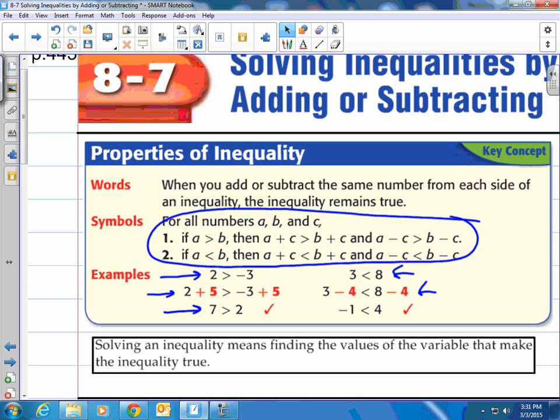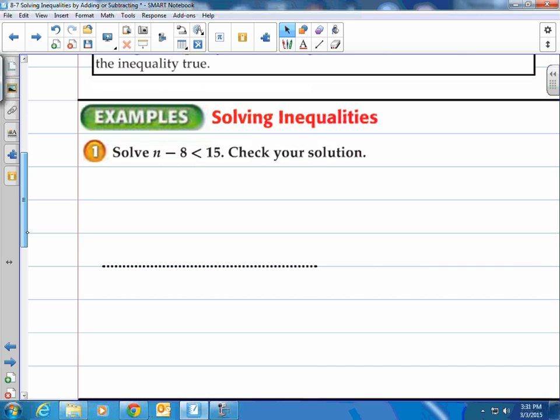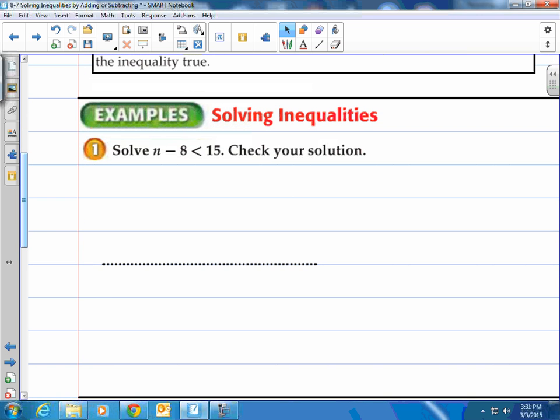It says solving an inequality means finding the values of the variable that make the inequality true. What numbers can you plug in for the variable and keep that sentence true? So take a look at this first example. Solve n minus 8 is less than 15. Then check your solution. So first off, to solve these it's very similar to solving equations. So you have your inequality, that's what you write down. Step one would be find out what you need to do. In this case to get n by itself we need to add 8 to both sides. That will get rid of that minus 8. And then you have n is less than 23.